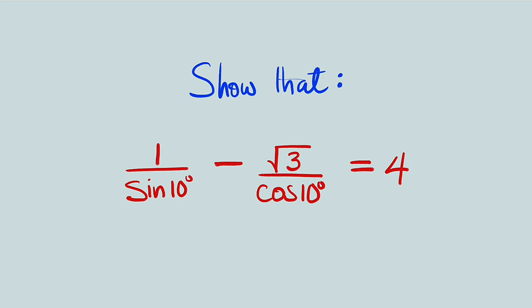Hello, good dear viewers. In this tutorial, we want to show that 1 divided by sine of 10 degrees minus root 3 divided by cosine of 10 degrees is equal to 4.